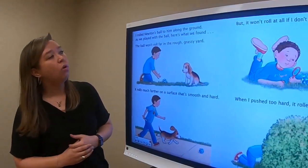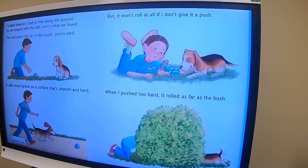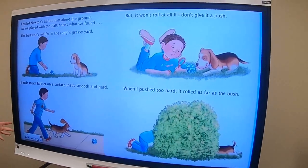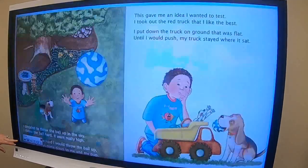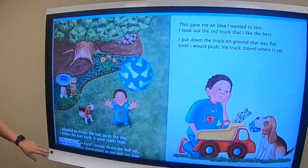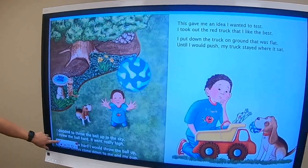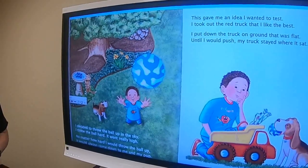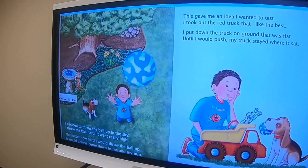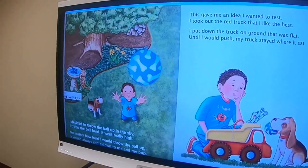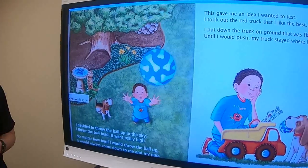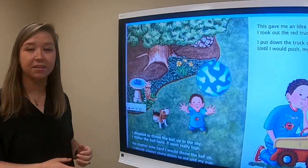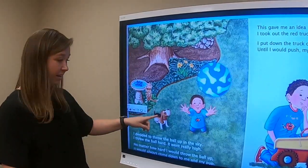It said, but it won't roll at all if I don't give it a push. When I push too hard, it rolled as far as the bush. Remember, forces are what make things move. So it says, I decided to throw the ball up in the sky. I threw the ball hard. It went really high. No matter how hard I would throw the ball up, it would always come down to me and my pup. Remember I said that apple falling and hitting Sir Isaac Newton in the head? Maybe that's why the ball comes down and lands in their hands again.